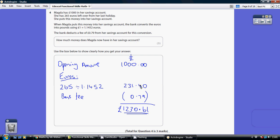So once Magda's gone and converted those euros into pounds, she gets an extra £231.40 into her savings account. At that point, she would have a thousand that she started with and this extra bit from the euros.